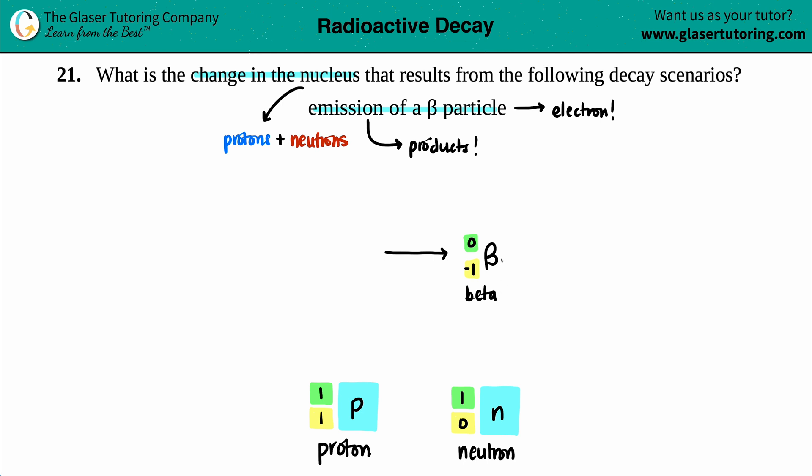And now we have to introduce our proton and our neutron into this balance equation. So let's see. I have to make the numbers work. Now, in order for this to work, just know that the top numbers on the left-hand side of the equation have to equal all the top numbers on the right.